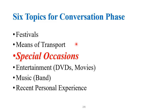The B1 exam is 10 minutes long and it is in two sections. The first one is the personal topic, which is a five-minute section, and the second one, which is the conversation phase, is also five minutes. In the personal topic section, you have to prepare a topic of your own choice and take it to the exam. In the conversation phase, you already have six prescribed topics. These are chosen by Trinity College and you cannot change them.